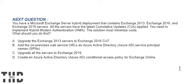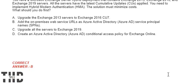What should you do first? Option A: Upgrade the Exchange 2013 servers to Exchange 2016 CU7. Option B: Add the on-premises web services URL as an Azure Active Directory service principal name. Option C: Upgrade all servers to Exchange 2019. Option D: Create an Azure Active Directory conditional access policy for Exchange Online. The correct answer is Option B.